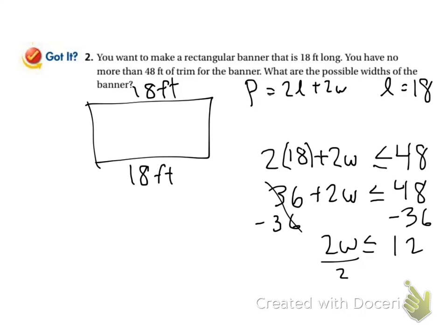Divide by 2 and W is less than or equal to 6. So my width could be 6, 5, 4 — actually it could be anywhere in between there. It just needs to be 6 feet at the biggest it can be. I could have like 5.5 feet — that would be okay.